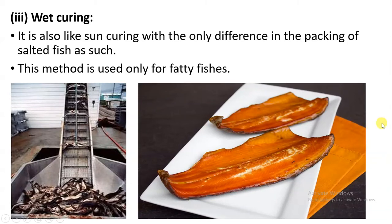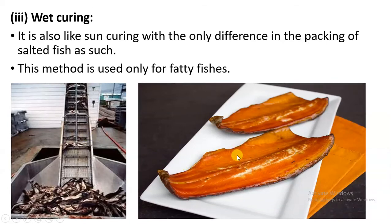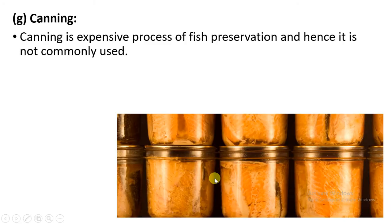The next method is wet curing, also called sun curing. The difference here is that salted fish are packaged. Mostly fatty fish is used in wet curing. The next preservation method is canning, which is quite an expensive process and not commonly used.